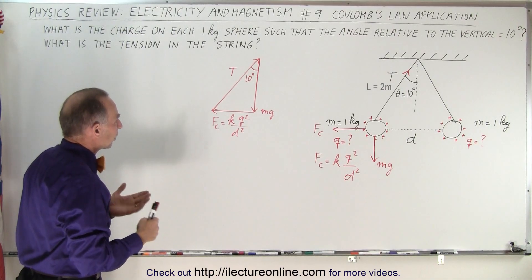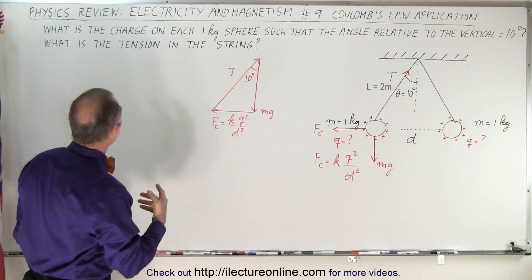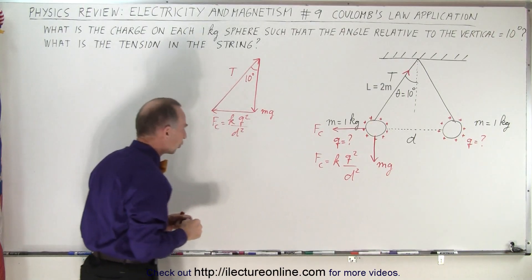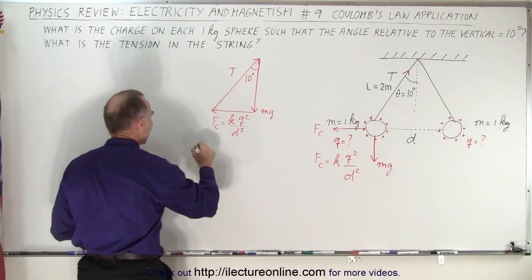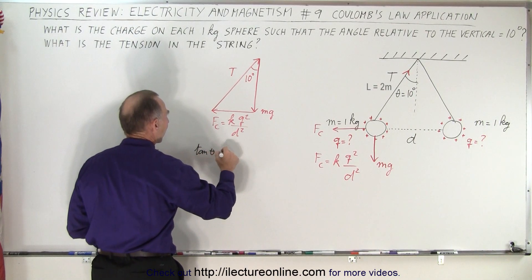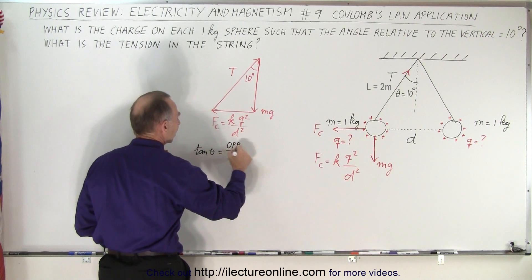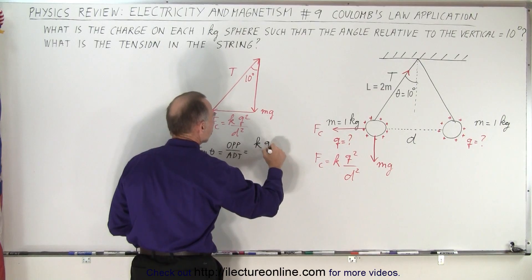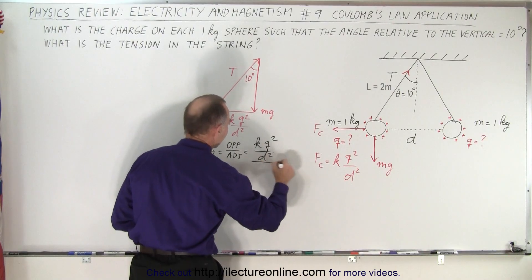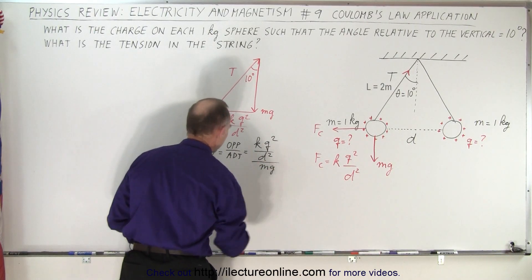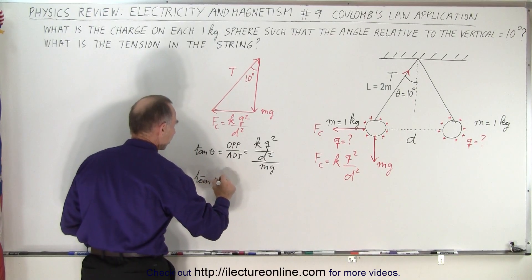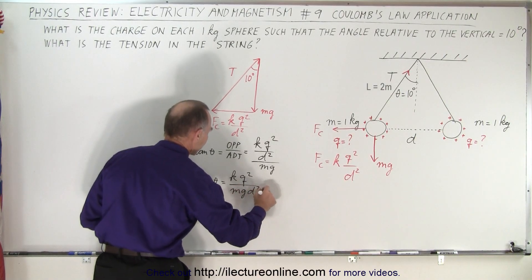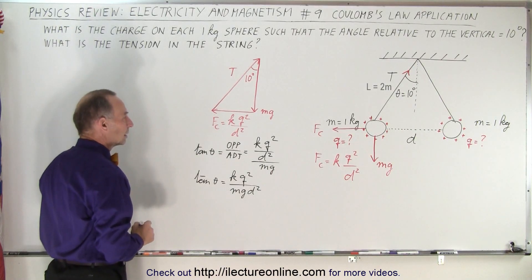And then in order to solve this question, because after all what are we looking for? We're looking for the amount of charge. We're solving for Q. And so what we can then say is that the tangent of the angle theta, by definition, which is the ratio of the opposite side of the angle to the adjacent side of the angle, must therefore equal the opposite side which is KQ squared divided by D squared, divided by the adjacent side which is mg. So in other words, the tangent must be equal to KQ squared divided by mgD squared.